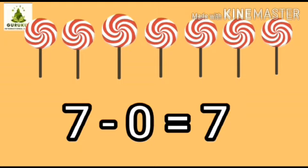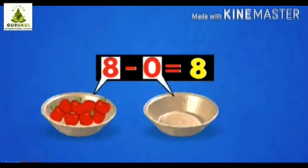Here is another example: 8 minus 0. In one bowl there are 8 apples and in another bowl there are 0 apples — that means nothing. So the answer will come 8.